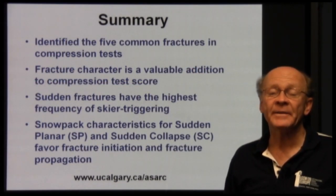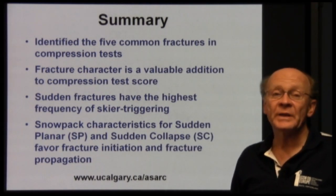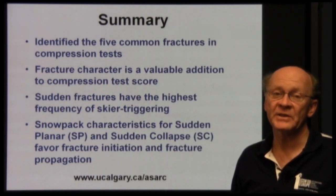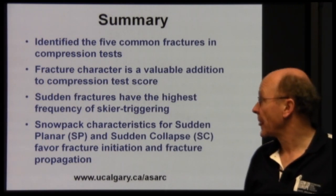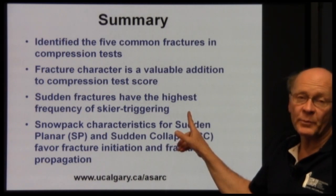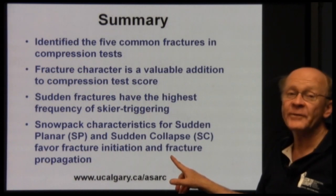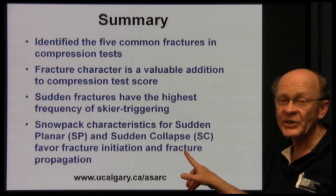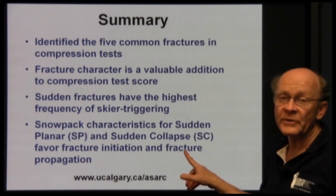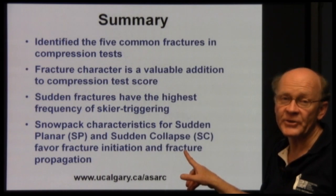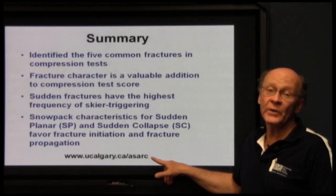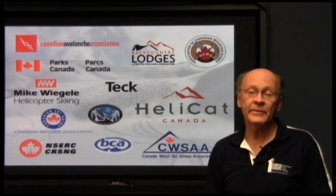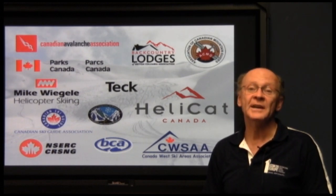In summary, Alec identified five common types of fractures in compression tests and showed that fracture character is a valuable addition to the compression test score. Keep in mind that no single compression test or point observation of snowpack is a foolproof indicator of whether skier triggering is likely. Sudden planar and sudden collapse fractures had the highest frequency of skier triggering, and subsequent work showed these snowpack characteristics favor both initiation and propagation of fractures. There's more on fracture character on the ASARC website. Thank you.